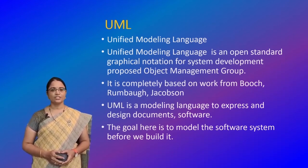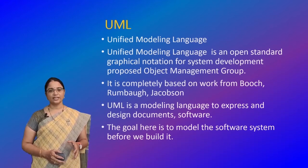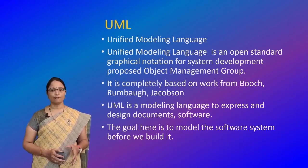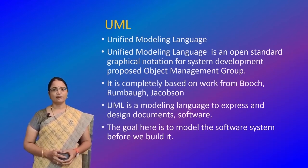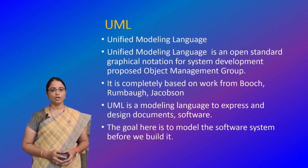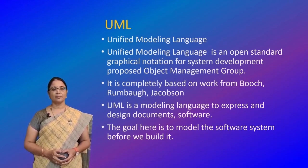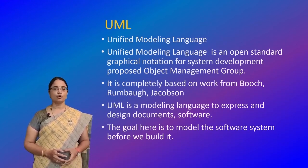UML is actually a combination of several notations: object-oriented design, object modeling technique (OMT), and object-oriented software engineering (OOSE). The Unified Modeling Language is a family of graphical notations backed by a single metamodel that helps in describing and designing software systems, particularly those built using object-oriented style — that is, using OOPS concepts.